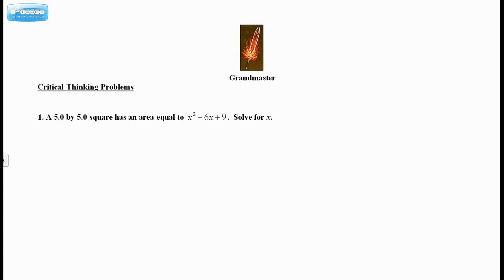Moving on to the Grandmaster for Chapter 5, Section 4. The question says: A 5 by 5 square has an area equal to x squared minus 6x plus 9, solve for x.